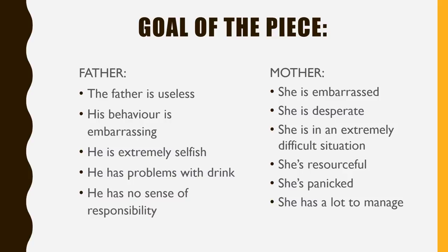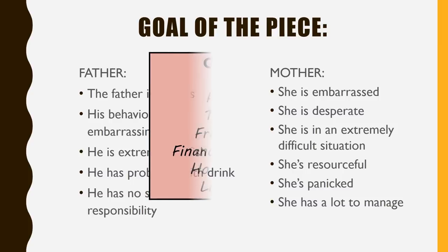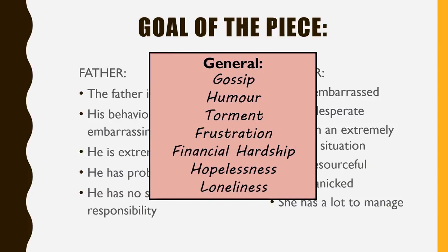These are the examples of vocab that you should be annotating, or at least sort of remembering. So if we're not thinking about the father in this context, we're definitely thinking about the mother. And there's very much a sense of embarrassment, desperation, of how difficult the situation she's in.